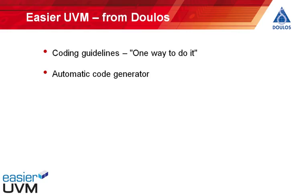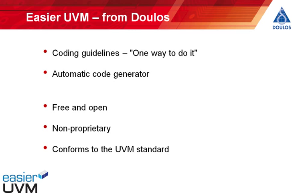That's where Easier UVM from Dulos comes in. Easier UVM has two parts to it: a set of coding guidelines that provide just one way to do it, and an automatic code generator. The coding guidelines and the code generator are free to use — they're open, non-proprietary, they don't tie you into any particular tool vendor, and they conform completely to the UVM standard.